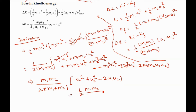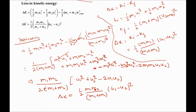So the loss in kinetic energy is ΔK = (1/2) · m1·m2 / (m1 + m2) · (u1 − u2)². To summarize, when two bodies move in the same direction: the velocity after collision is v_com = (m1·u1 + m2·u2) / (m1 + m2), and the loss in kinetic energy is ΔK = (1/2) · m1·m2 / (m1 + m2) · (u1 − u2)².